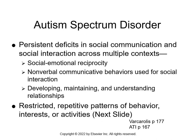Autism spectrum disorder is one we're going to focus on. Autism is a persistent deficit in social communication and social interaction. These individuals are unable to reciprocate socially and emotionally. A lot of times they're very nonverbal, and they are unable to develop, maintain, and understand most relationships.